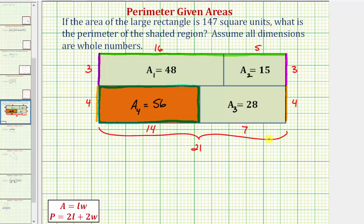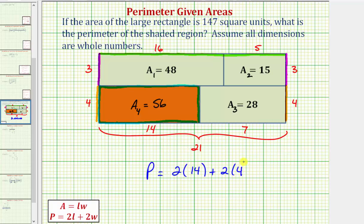Now we have all the information needed to find the perimeter of the shaded region — the orange rectangle. The perimeter equals the sum of the four sides, or two times the length plus two times the width. So the perimeter is two times 14 plus two times 4, which equals 28 plus 8, which equals 36. The perimeter is a length, so the units would be units, not square units.